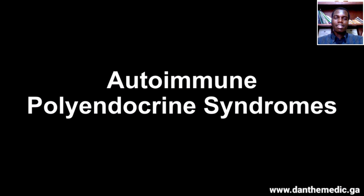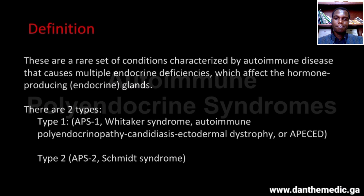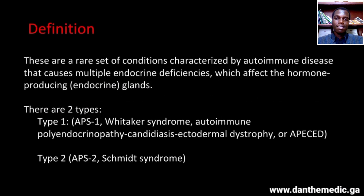Hello and welcome to another lecture in the lecture series. Today we're going to be talking about autoimmune polyendocrine syndromes. These are a real set of conditions characterized by autoimmune disease that causes multiple endocrine deficiencies, which affects the endocrine glands.